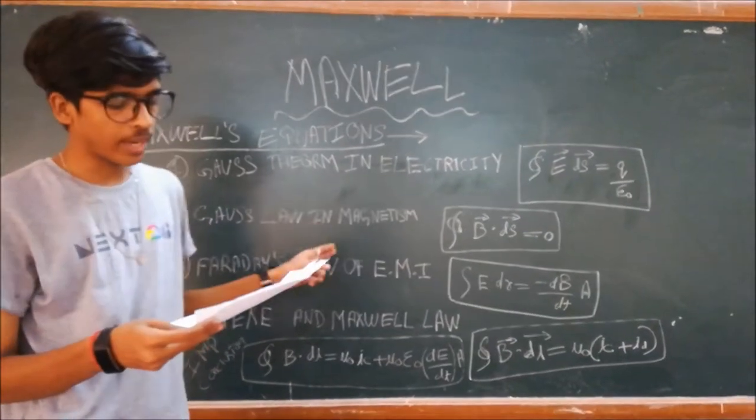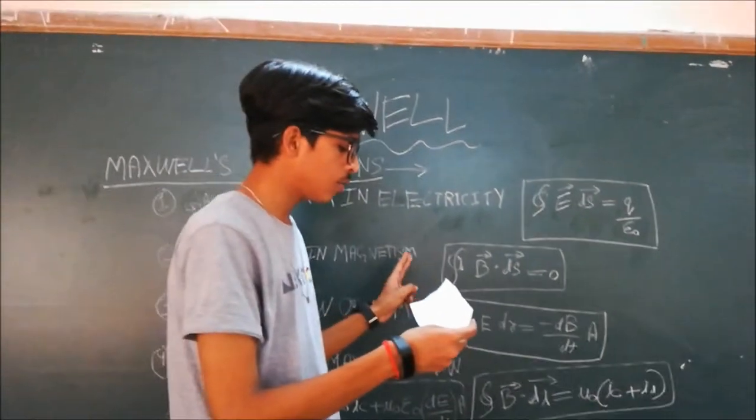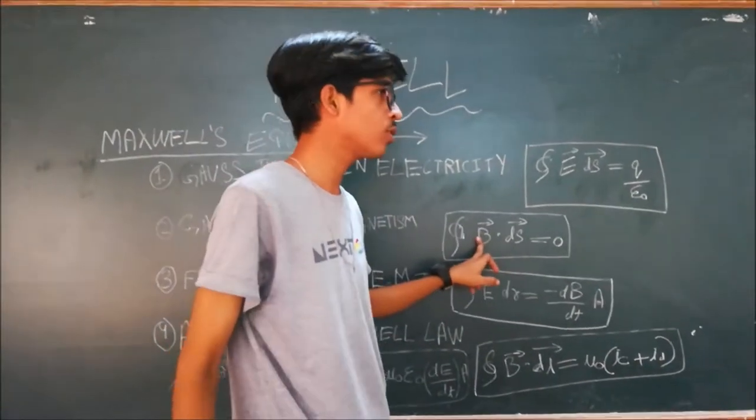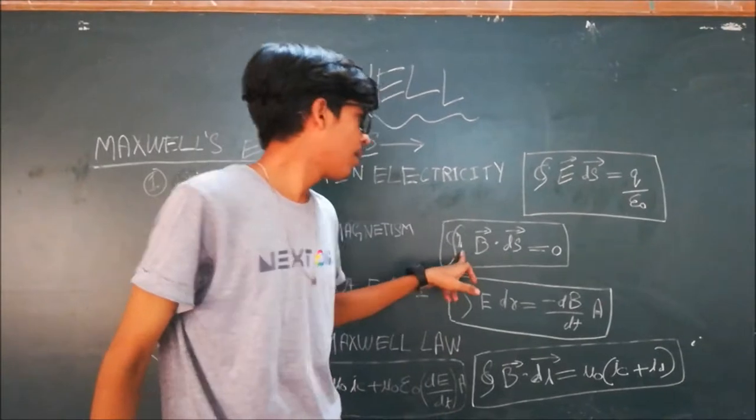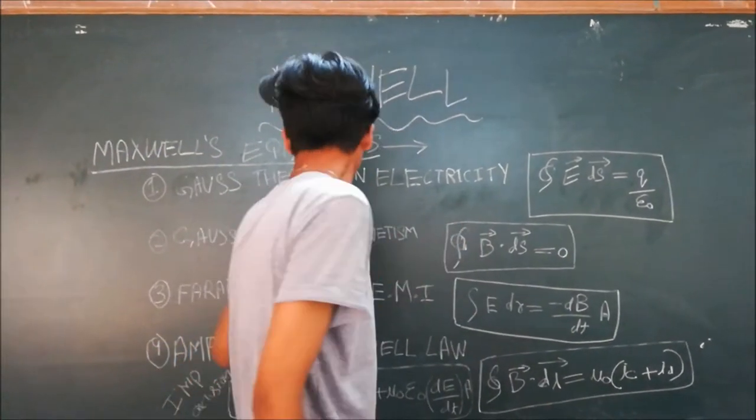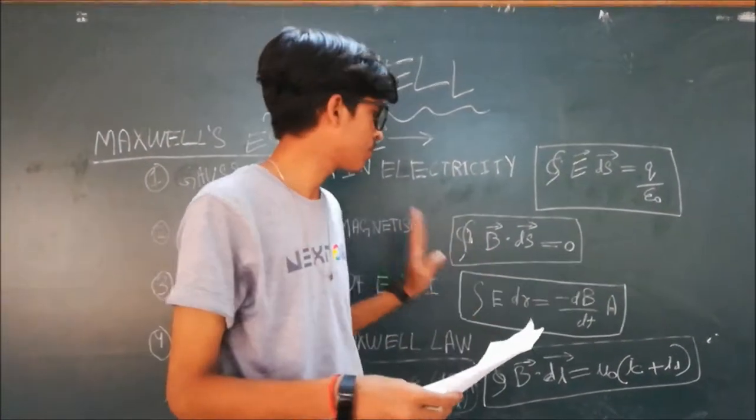And second equation is Gauss's law in magnetism. Magnetic field is closed by this integration. In this Gauss's law in magnetism, there is no north and south poles. They are free.